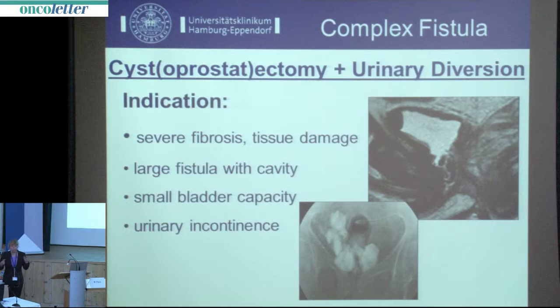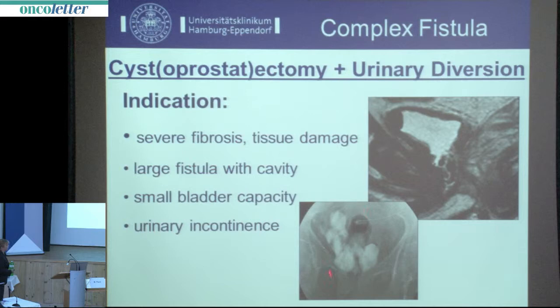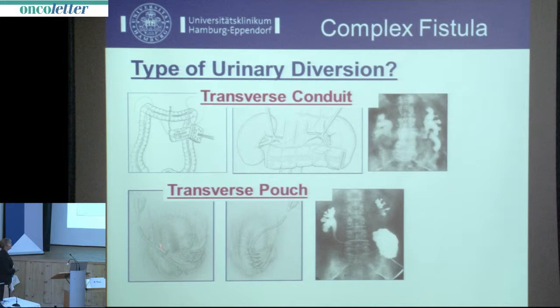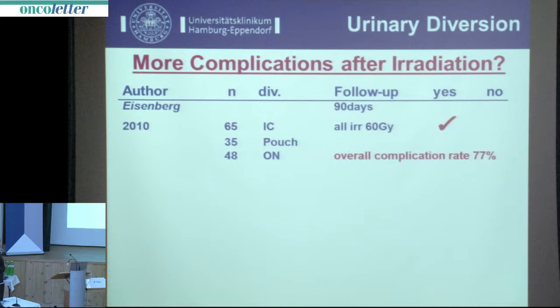Who will need cystectomy and urinary diversion? These are cases with cavity formation, large fistula, small bladder capacity, and incontinence. For urinary diversion in irradiated patients, I personally prefer bowel segments outside the irradiation field — either a transverse conduit as incontinent diversion or a transverse pouch as continent diversion — because the complication rate using standard techniques like ileal conduit, ileal pouch, or orthotopic neobladder is significantly increased in irradiated patients.